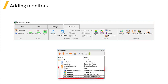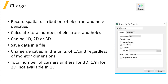Once added, they will appear under the charge solver object in the objects tree. The charge monitor can record the spatial distribution of electron and hole densities within the monitor's space. In addition, it is capable of calculating the total number of electrons and holes within the monitor's space using spatial integration.